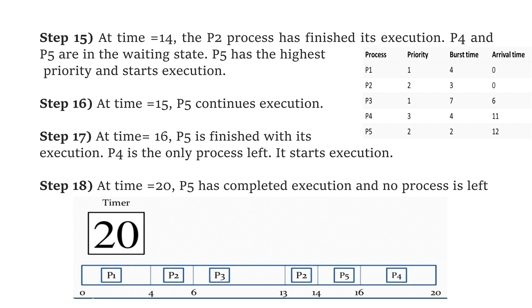At time 14, process P2 has finished its execution, and P4 and P5 will be in the waiting state. P5 has the higher priority, so it starts execution. At time 15, P5 continues its execution, and at time 16, P5 will finish its execution. P4 is the only process left, so it starts execution, and at time 20, P4 will complete its execution.